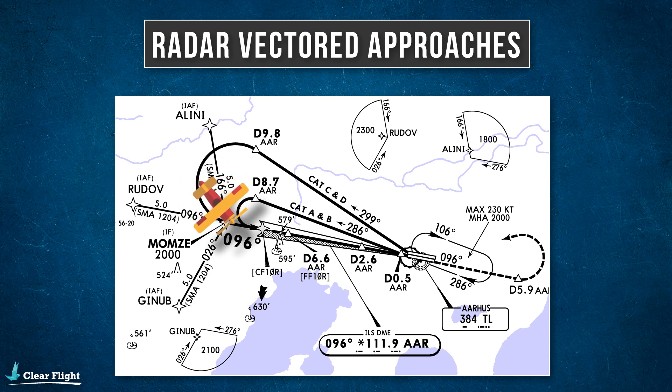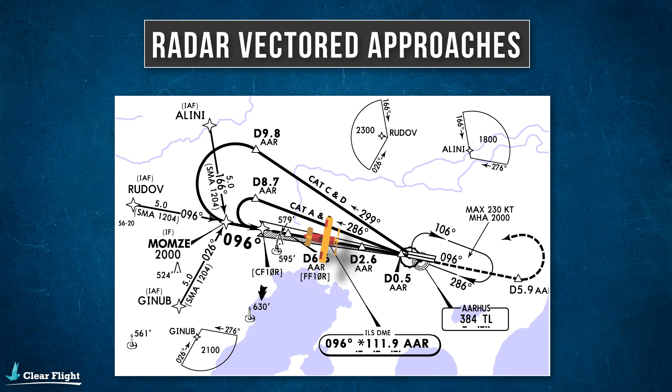Once you've been given a final intercept heading and you've been cleared for the approach, you simply maintain this heading, and it's your job to intercept the final approach track. Sometimes controllers will include some extra information to help you with your situational awareness, such as telling you when they're turning you onto downwind or base. But they don't have to pass this information, so on a radar vectored approach it's always up to you to keep situational awareness so that you can appropriately manage your speed and configure for the upcoming approach.